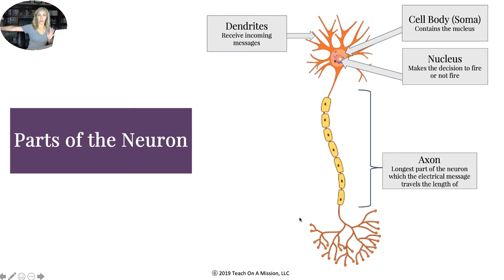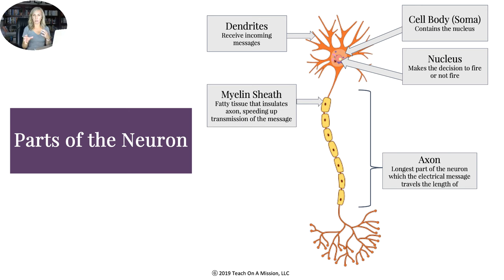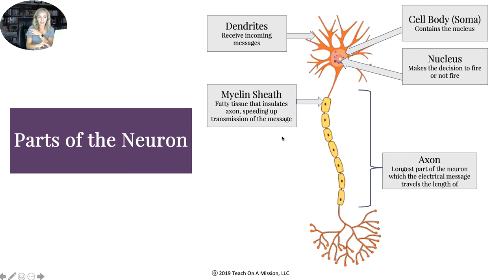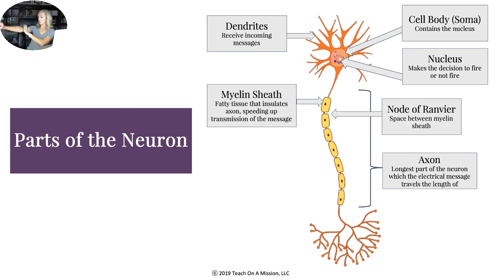Your right arm represents the axon — the longest part of the neuron, which the electrical message travels the length of. On the axon, imagine sweat bands going down your arm. These are called myelin sheath — they look like little sausage links. They are fatty tissue that insulates the axon, speeding up transmission of the message.